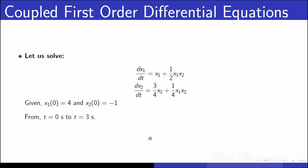Let us solve the second set of equations - two simultaneous or coupled first order differential equations with dependent variables x1 and x2. The initial conditions are: x1 at t=0 equals 4, and x2 at t=0 equals -1. We need to solve from t=0 seconds to t=3 seconds.